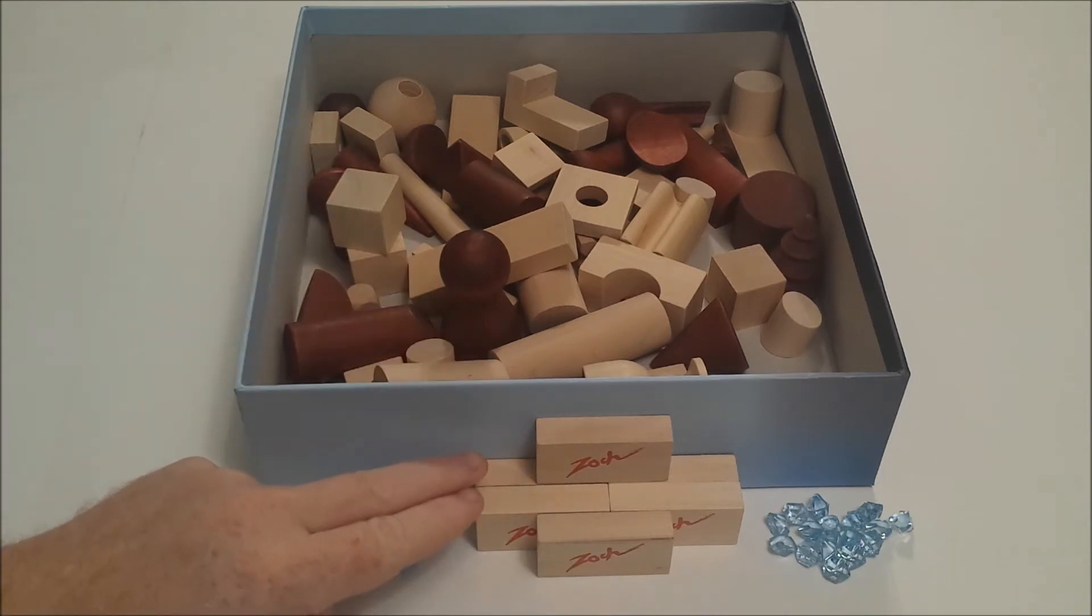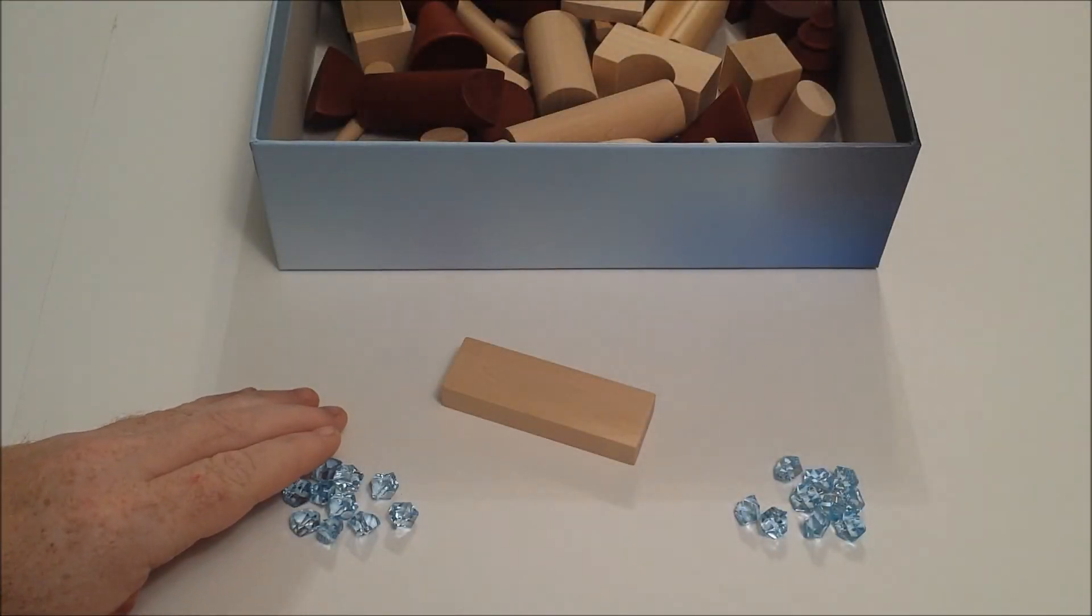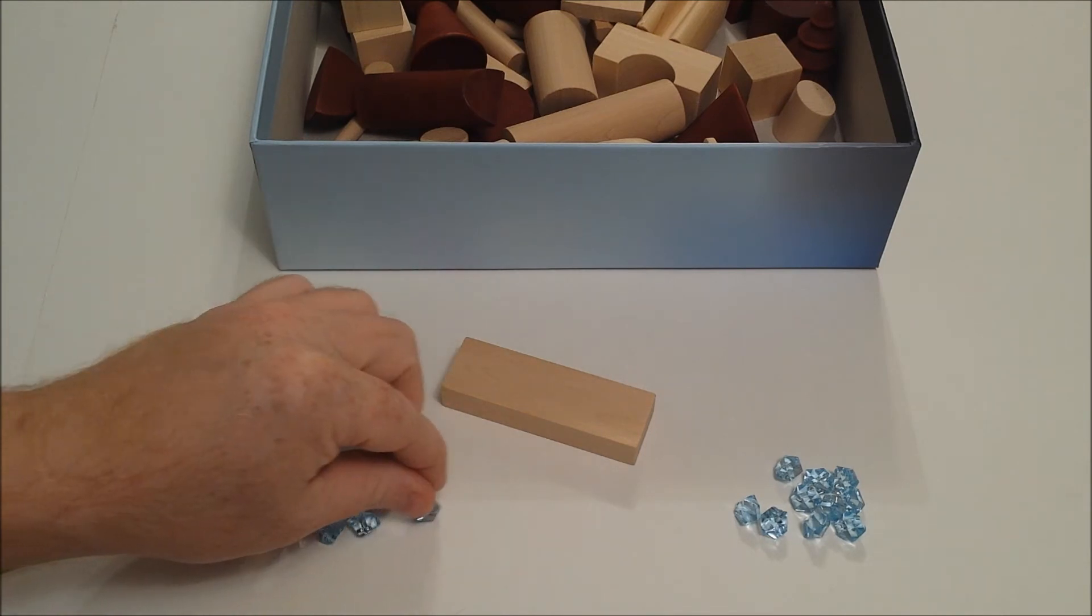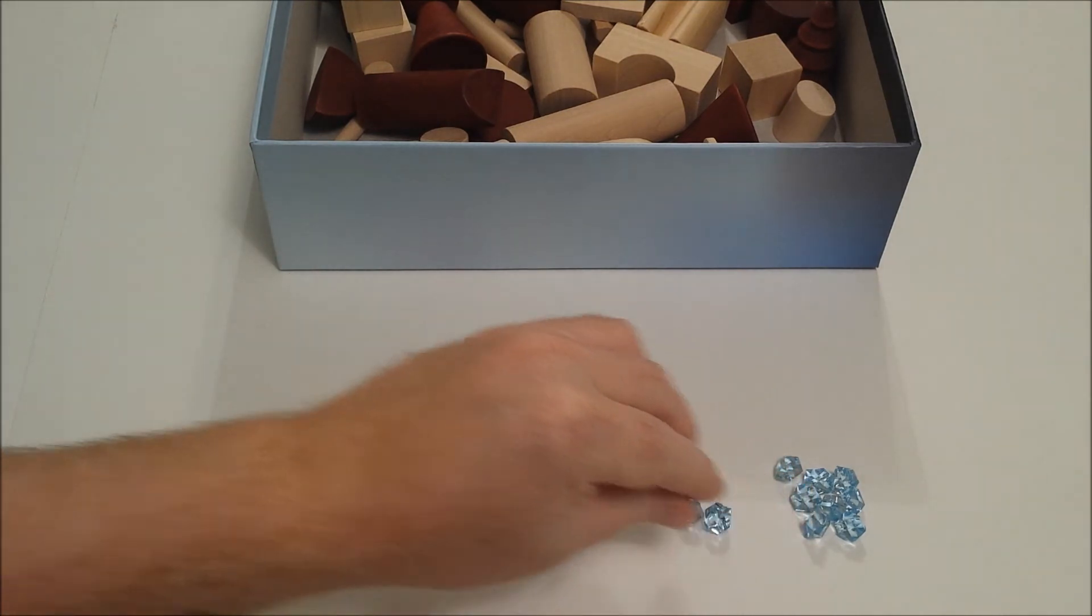There are specific blocks that are not allowed to be used for the base. Each player will receive 10 gems. The active player picks a piece to present for auction, using the gems to bid. The player with the highest bid will win the piece and add it to their structure.